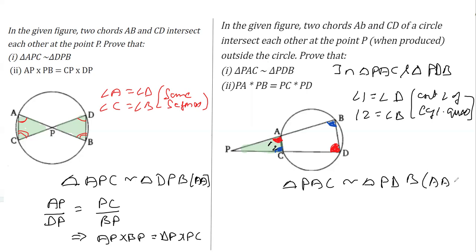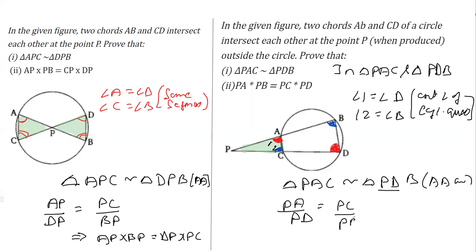Once these two angles are proven equal, the triangles are similar by AA similarity: triangle PAC is similar to triangle PDB, where P corresponds to P, A to D, and C to B. Writing the sides proportionally: PA/PD = PC/PB. Cross multiplying gives PA × PB = PC × PD, completing the proof.